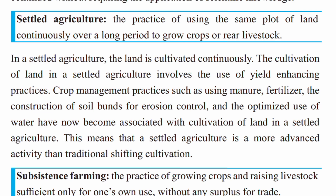Settled agriculture is what we call it. In settled agriculture, the land is cultivated continuously. The cultivation of land in settled agriculture involves the use of yield-enhancing practices.